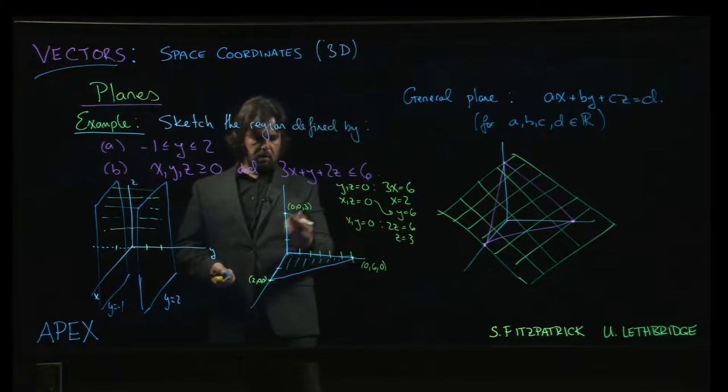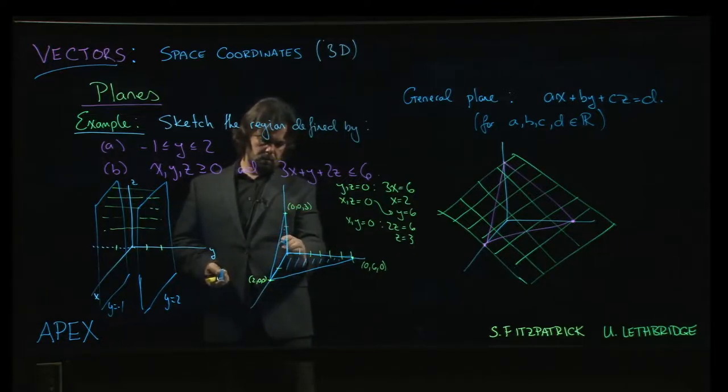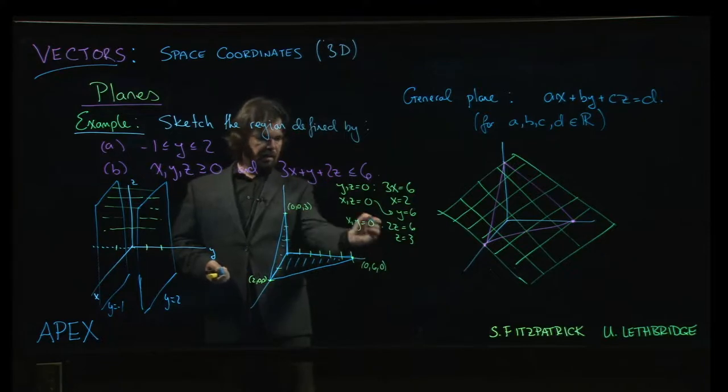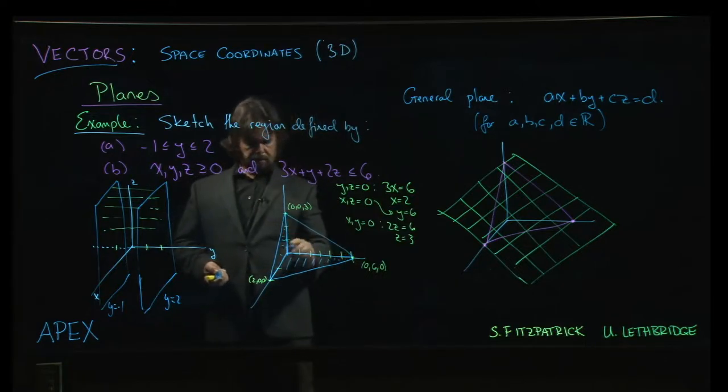Similarly, we could put y equal to 0, and we would get that line segment there. And we could put z equal to 0. Or sorry, x equal to 0, and we would get that line segment there.